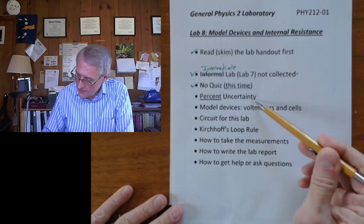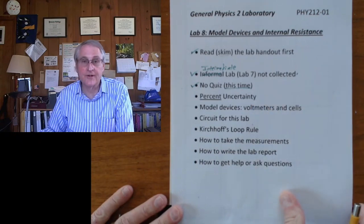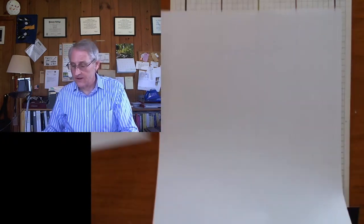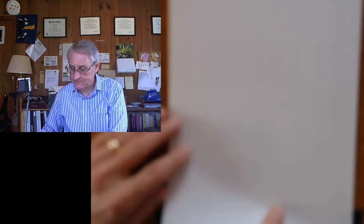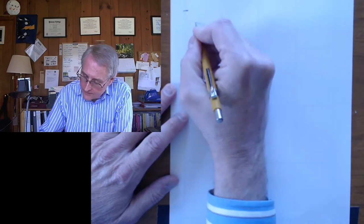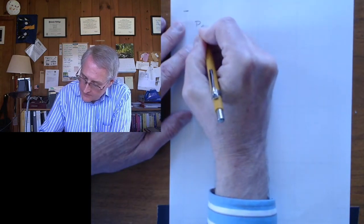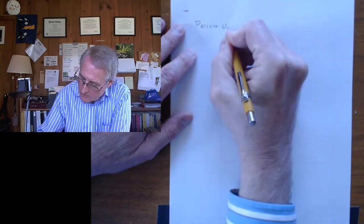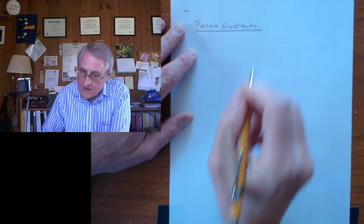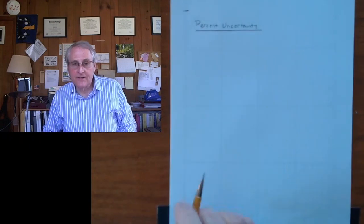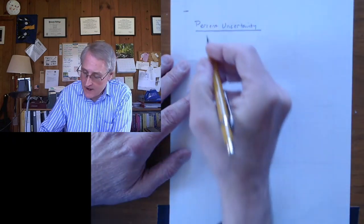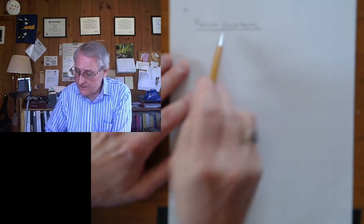So for starters, let's talk about percent uncertainty. The lab handout mentions this, that you want to report your results in terms of percent uncertainty. So let's see what that is. The first idea is that uncertainty is an estimate for error. We don't know what the error is, but we can estimate it with uncertainty.